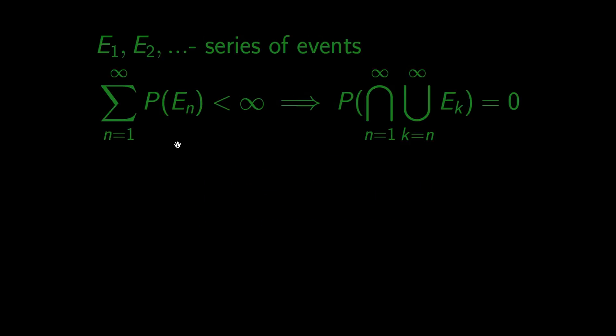It says that if the series of probabilities of events is convergent, then the probability that these events will keep happening is zero. But what happens if the series is divergent?